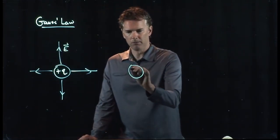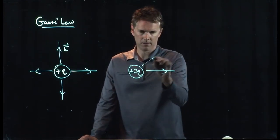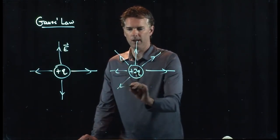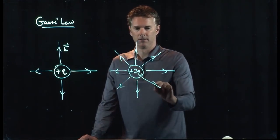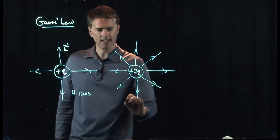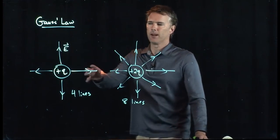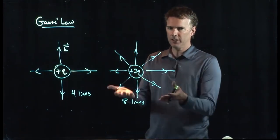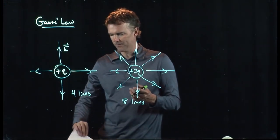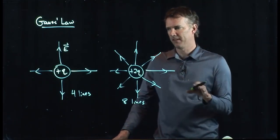But now let's double the q, plus 2q. And so we've got this, this, and so forth. We're going to get eight lines instead of four lines. We had four lines here. Now we have eight lines. And you can see what's happening, right? When I double the charge, I double the field lines. And this is really the whole point of Gauss's law if we do one more step.